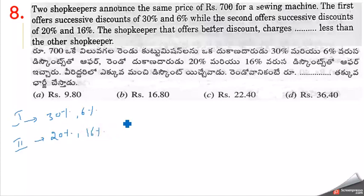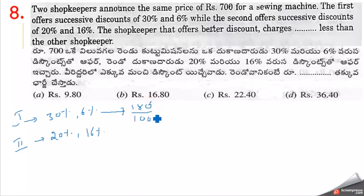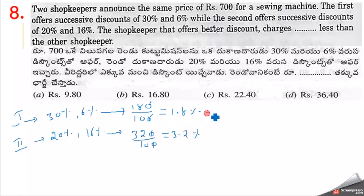30 plus 6 is 36 and 20 plus 16 is also 36, so both add to the same. Using xy by 100: first shopkeeper gives 30 into 6 equals 180 by 100 equals 1.8% additional discount. Second gives 20 into 16 equals 320 by 100 equals 3.2% additional discount. Difference is 3.2 minus 1.8 equals 1.4%.